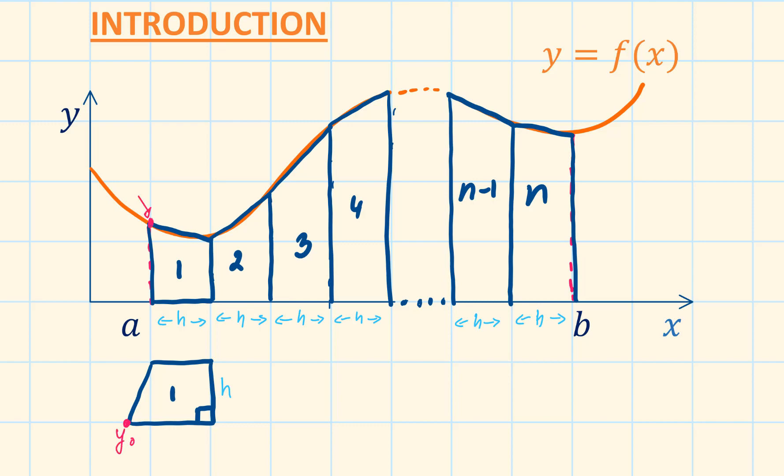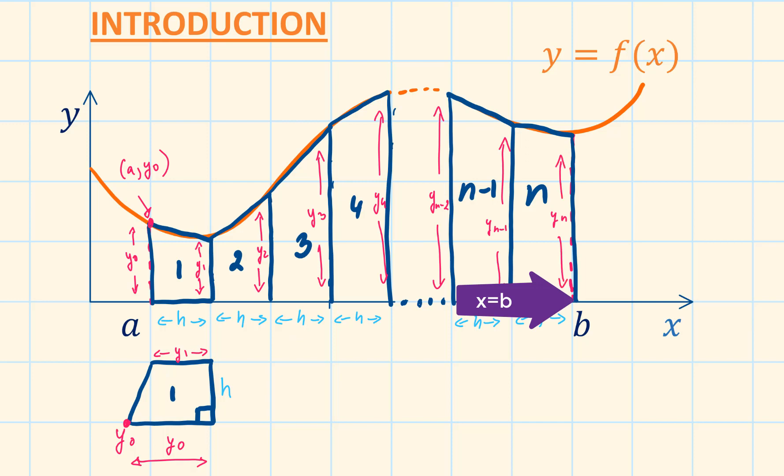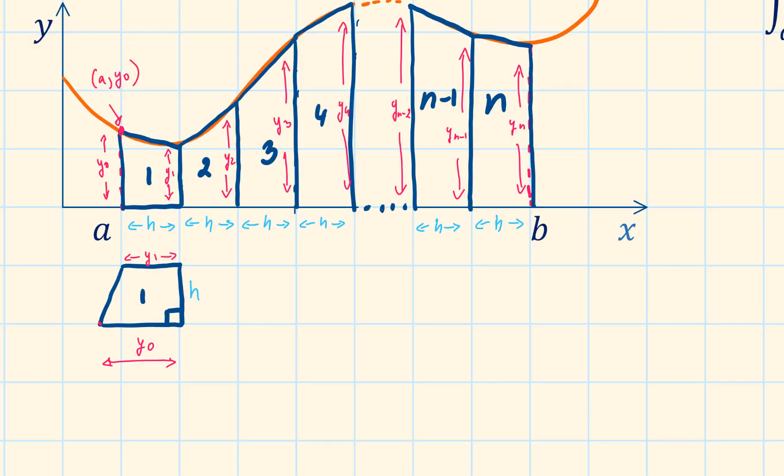Next you can calculate the value of y for each value of x that forms a boundary of one of the strips. So you find y for x equals a, x equals a plus h, x equals a plus 2h, x equals a plus 3h and so on up to x equals b. Notice that for n strips there will be n plus 1 values for x and n plus 1 values of y.